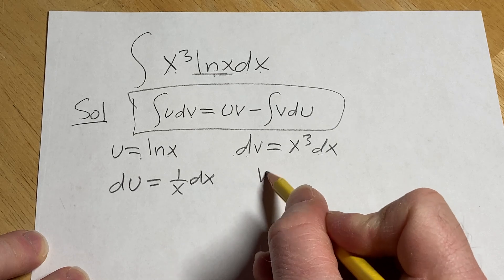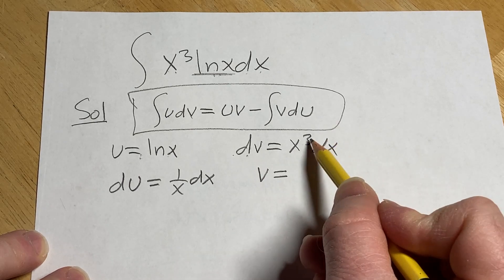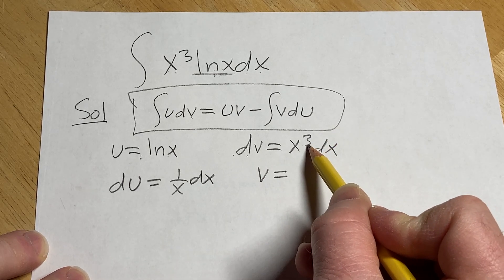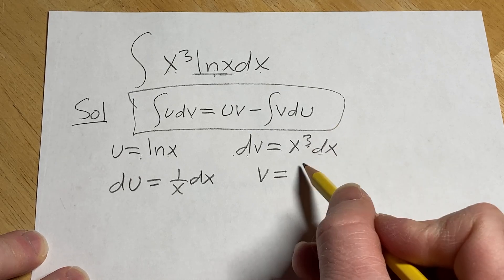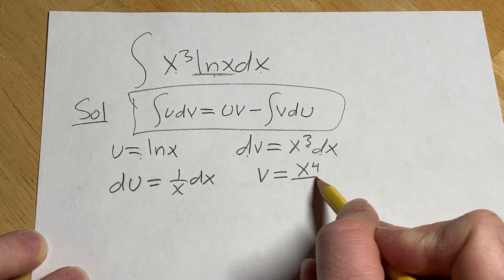Integrating both sides here we simply get v equals. Now we apply the power rule so we add 1 to the exponent here so 1 plus 3 is 4. This will be x to the 4th over 4.